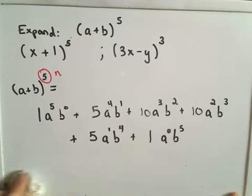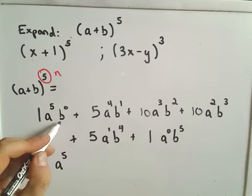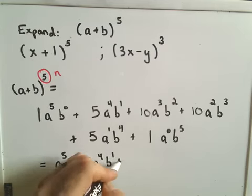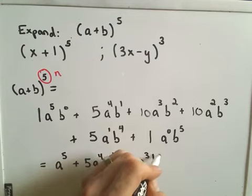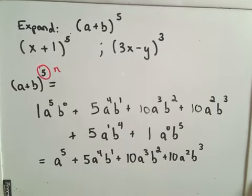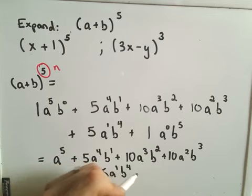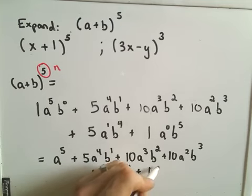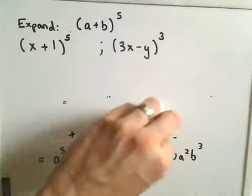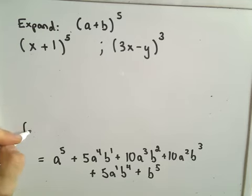Now we've got everything expanded out. Writing it more cleanly: 1·a to the 5th (since b to the 0 is 1), plus 5·a to the 4th·b, plus 10·a cubed·b squared, plus 10·a squared·b cubed, plus 5·a to the first·b to the 4th, plus 1·b to the 5th (since a to the 0 is 1). That's our expanded form of (a + b) to the fifth.